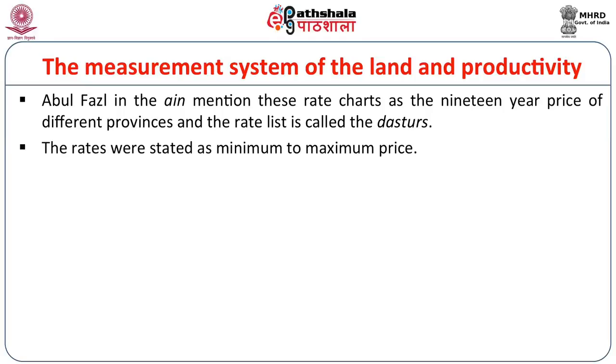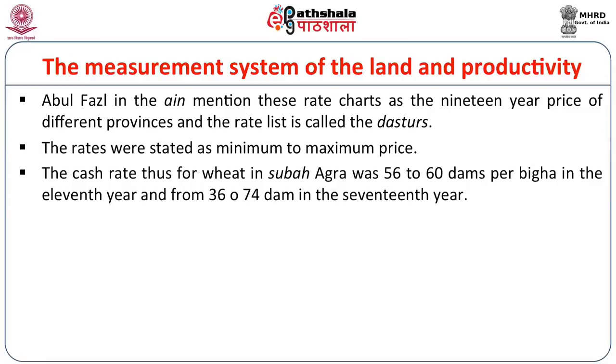Abul Fazal in his Ain mentions that the rate charts in the 19th year listed prices of different provinces — the rate list was called Dastur. The rate was stated from a minimum to a maximum price. For example, the cash rate of wheat in Subha Agra would be from 56 to 60 Dams per Bigha in the 11th year, and from 36 to 74 Dams in the 17th year. It is difficult to ascertain whether this rate only reflected the cash rate or also the productivity of the time.